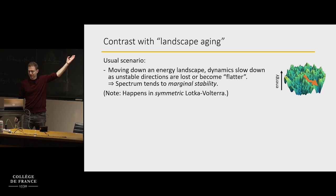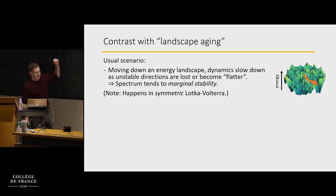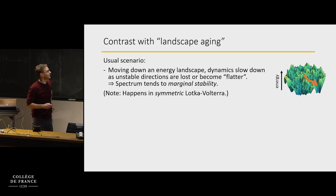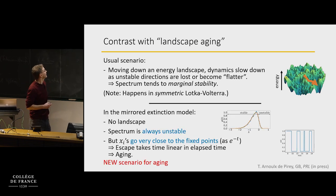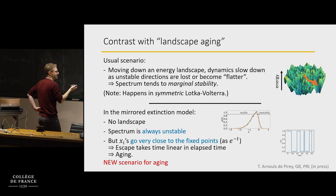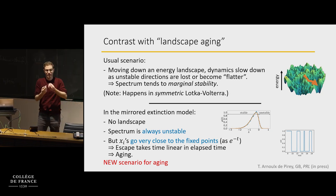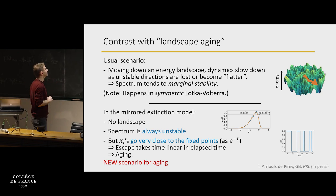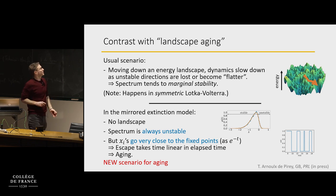Let me contrast this with landscape aging like in glasses. In our model, there is no landscape — we're not performing gradient descent over anything. This has to do with the asymmetry of the interactions. The second point is that the spectrum is always unstable, truly unstable, not close to marginality.